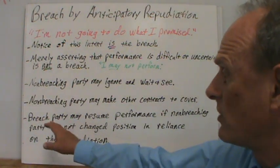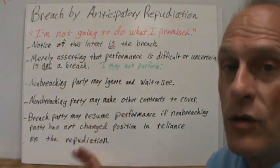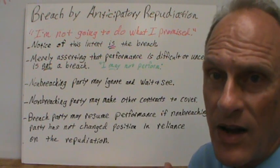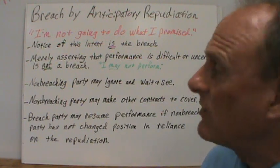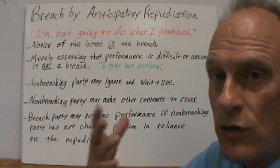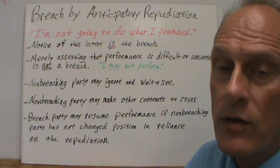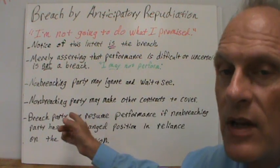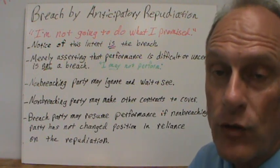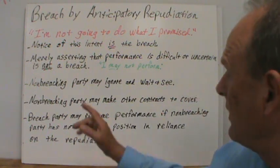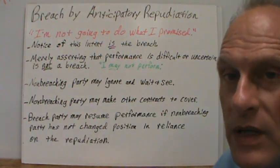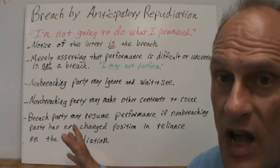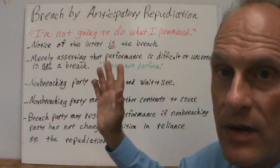The breaching party may resume performance — they may have a change of heart and decide to go ahead and perform after all. They're still free to perform according to the contract, so long as the non-breaching party has not changed their position by entering into a new contract or making other arrangements. Once the non-breaching party has changed their position in reliance on the repudiation, the breaching party is stuck with their repudiation and has breached.